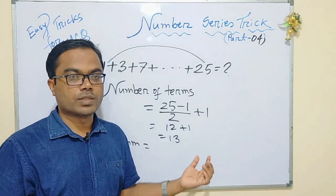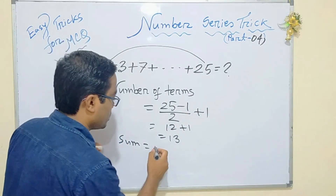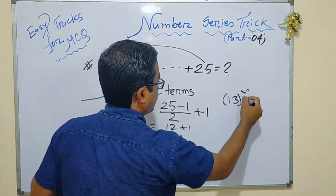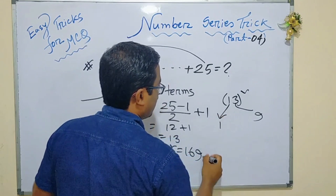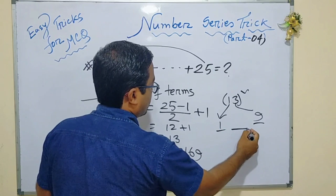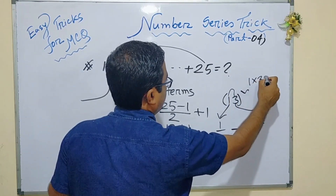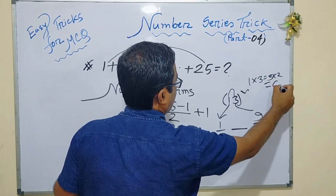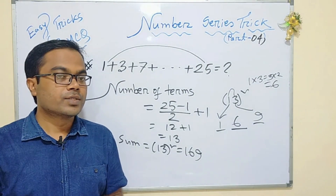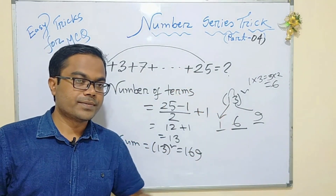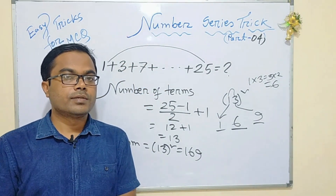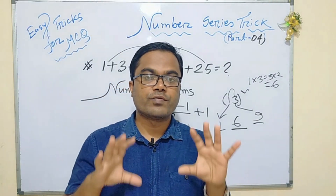Sum equals n squared. So 13 squared means 169. Find the middle slot: 1 multiplied by 3 equals 3, multiplied by 2 equals 6. Our result is 169.